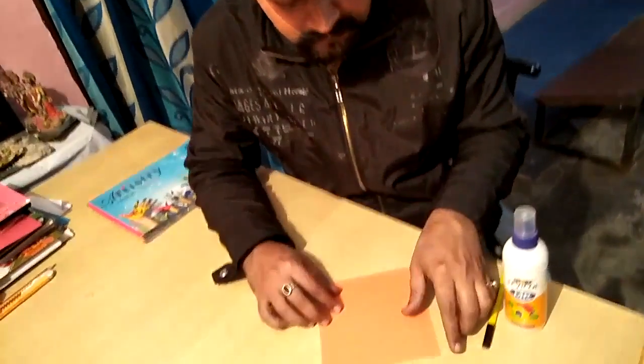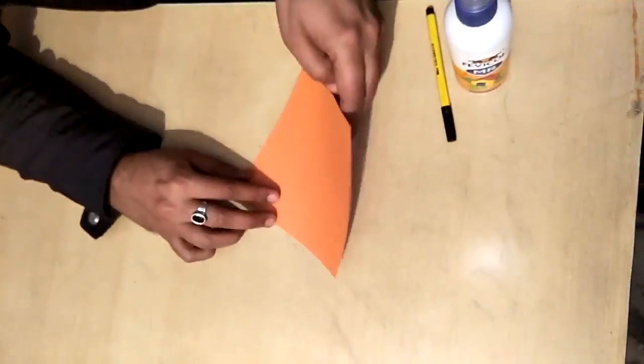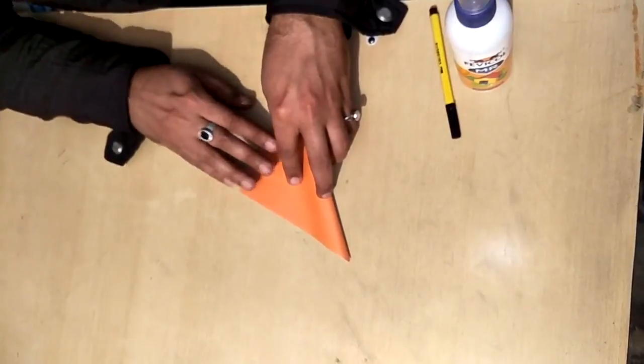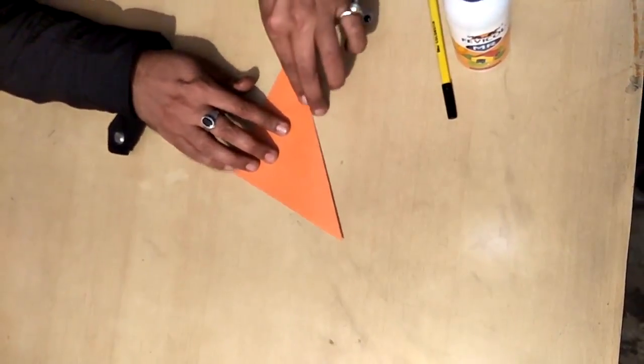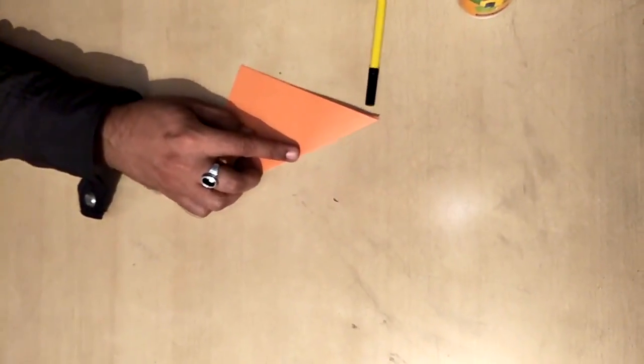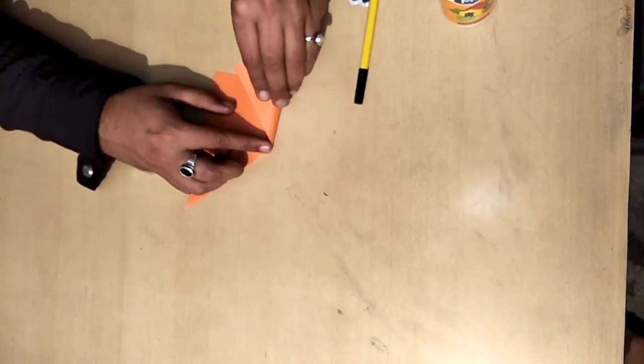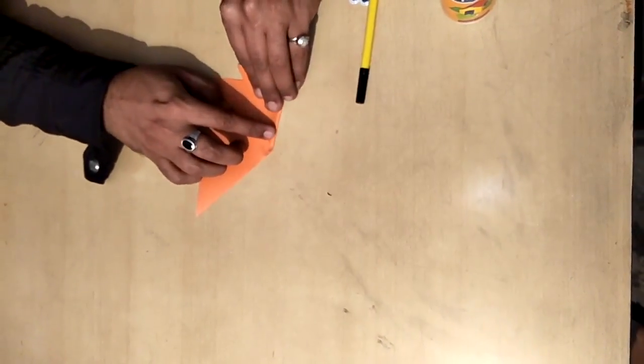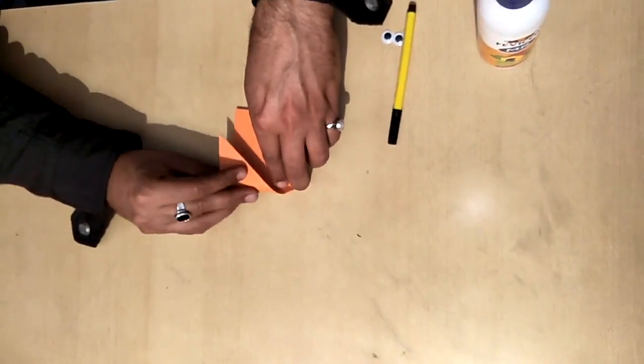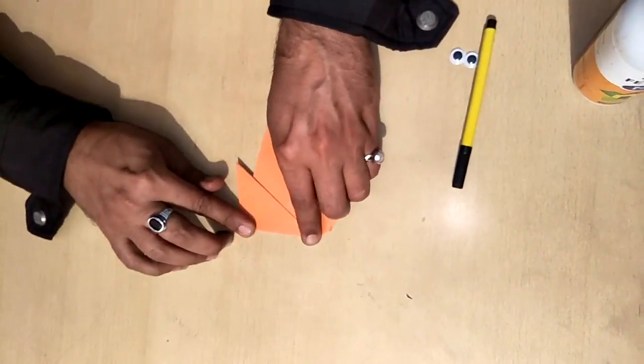First of all we have to fold our square shape in a triangle shape like this. Now we have to fold our sheet on this and this side like this, and then from this side also. We have to turn the paper like this.